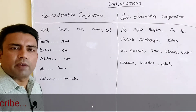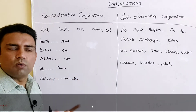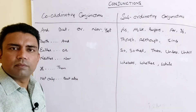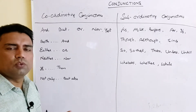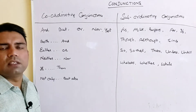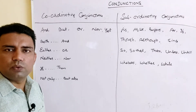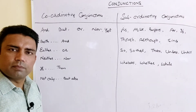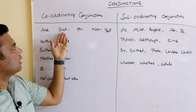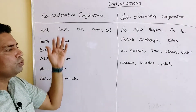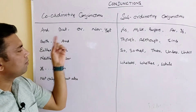For example, Ram and Sham, Rahul and Mohan, book and notebook. If we are adding two facts together, then we use 'and' — for example, 'Ram and Sham both are going to play.' 'But' is another connector which is used to show contradictory things, like 'Ram is a good boy but he does not like to study.'